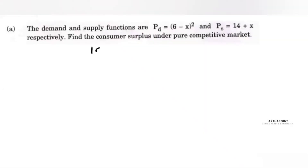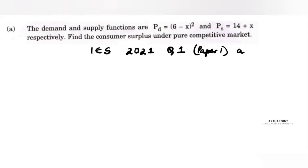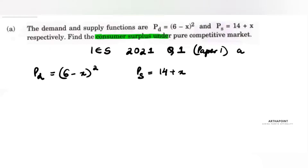This is IES 2021, Question 1, Paper 1. Let's see what the question is saying. You are given a demand function and a supply function. The question is asking you to find consumer surplus under the pure competitive market. In order to find consumer surplus, we should know the definition.